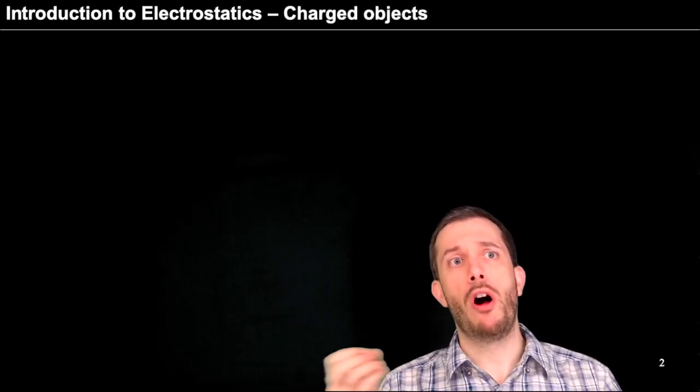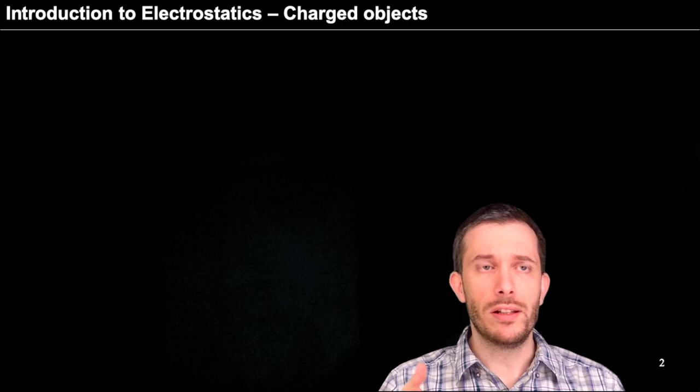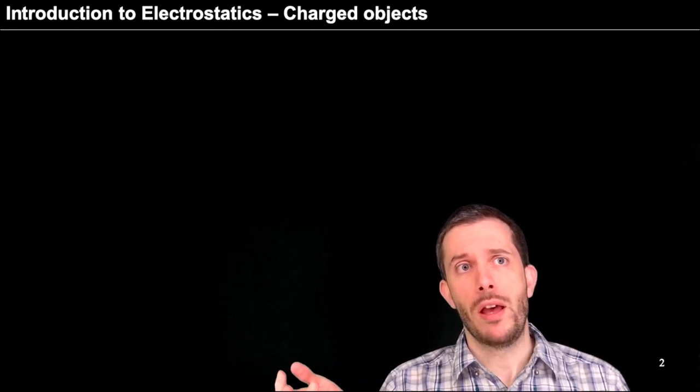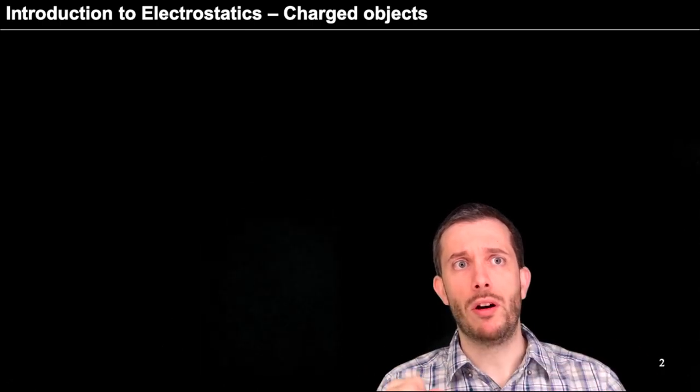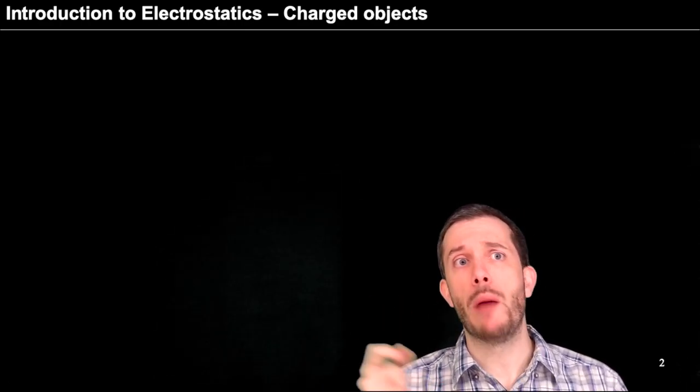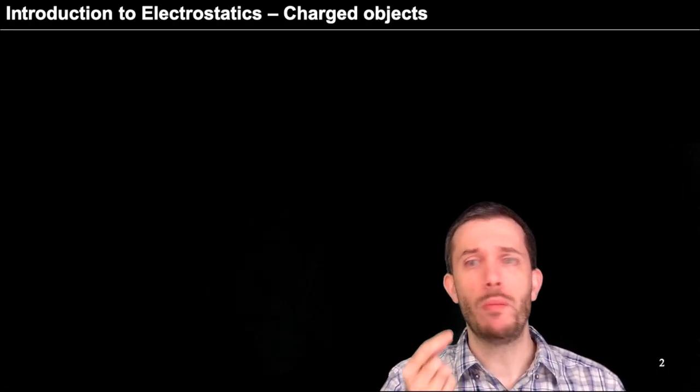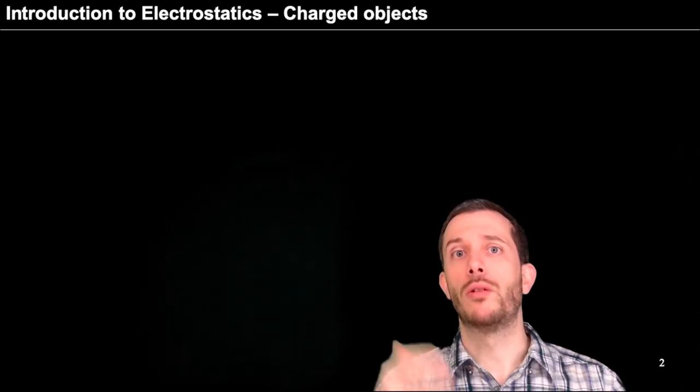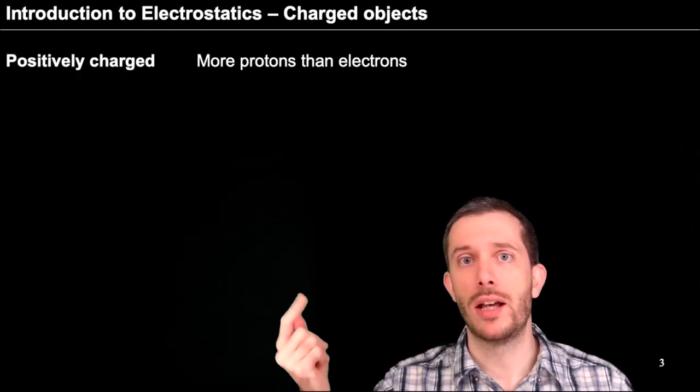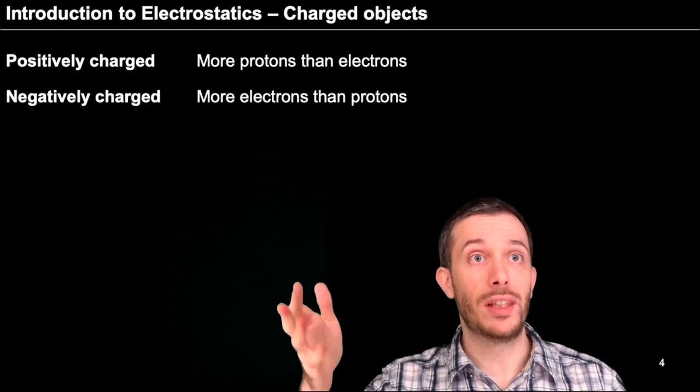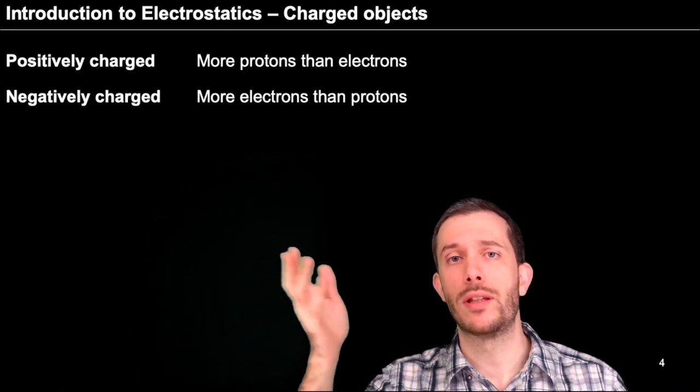In earlier videos we have already talked about anions being negatively charged and cations being positively charged. Now these principles can not only apply to individual atoms but to entire objects. So if an object is positively charged it has more protons than electrons, and if it's negatively charged more electrons than protons.